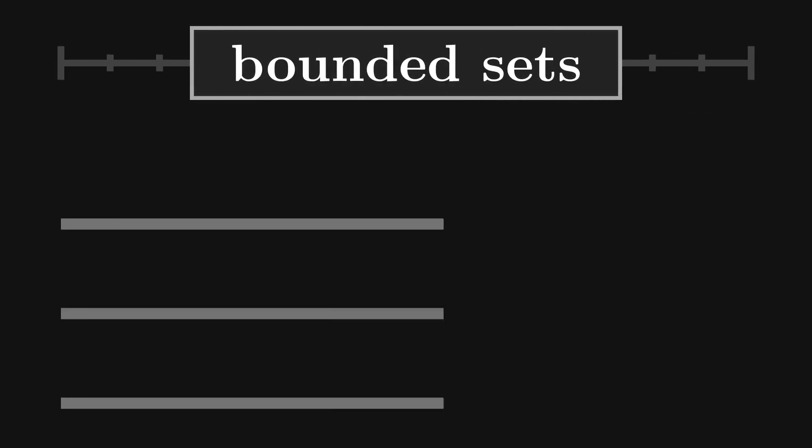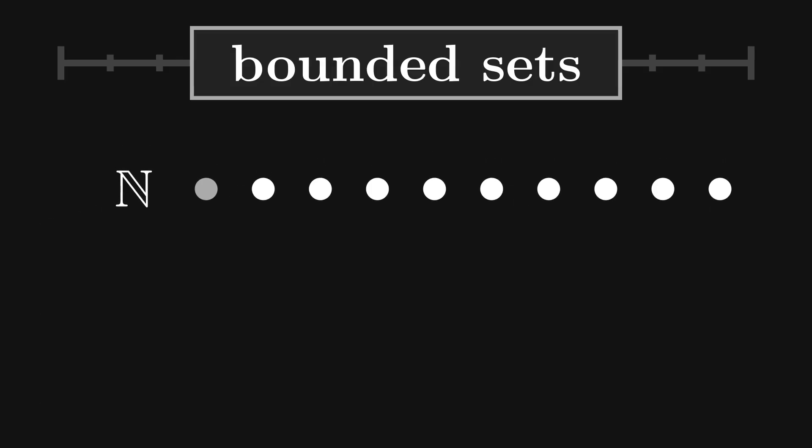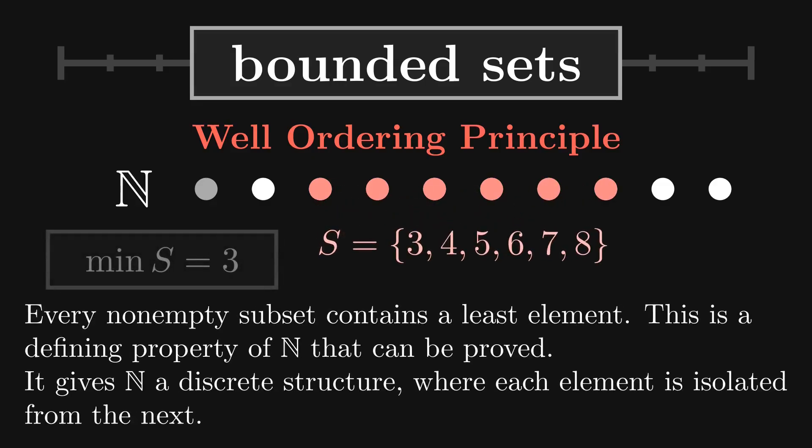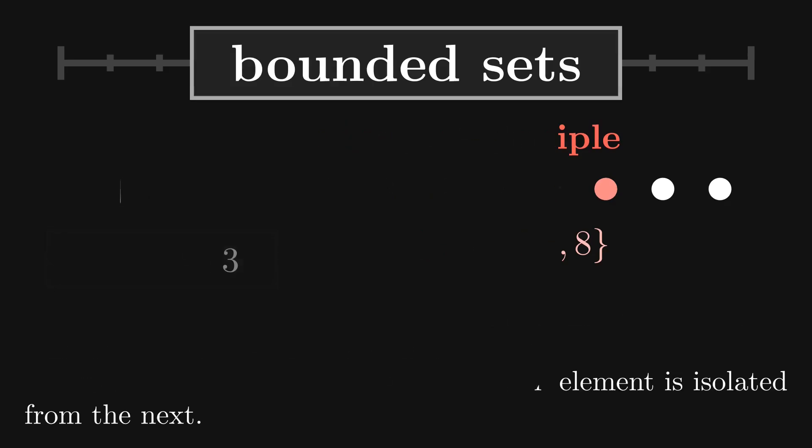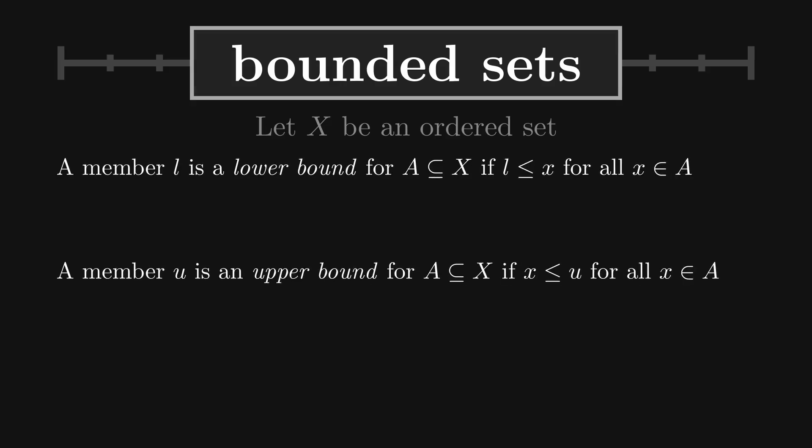Next, we want to infer what qualities are possessed by subsets of this ordered field. In the same way that the well-ordering principle characterizes the natural numbers, we seek an analogous description of R. Let X be an ordered set. For a given subset of X, we start with definitions of upper and lower bounds.